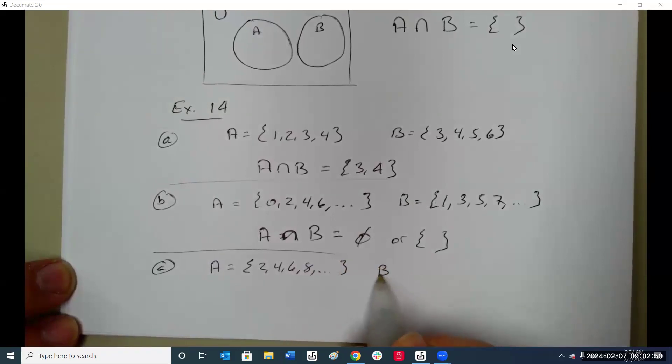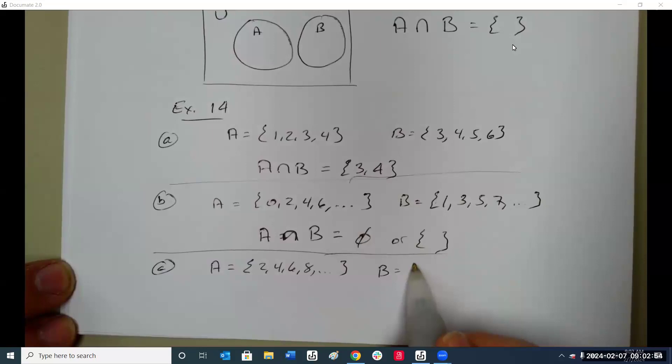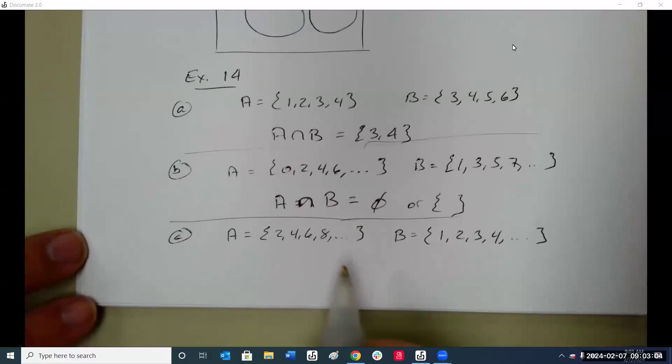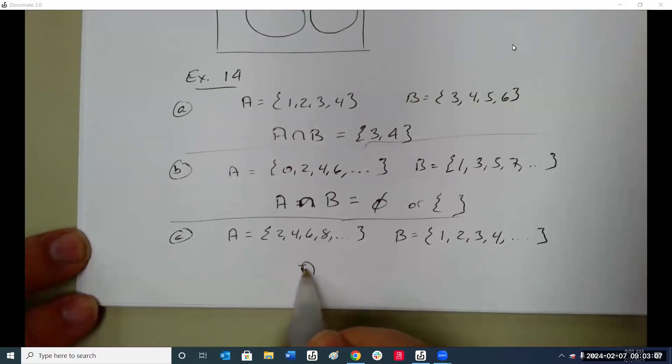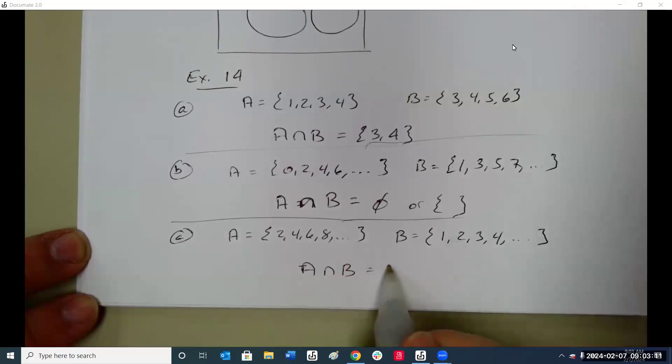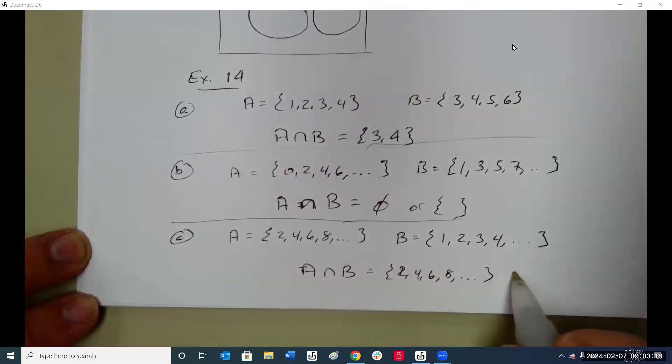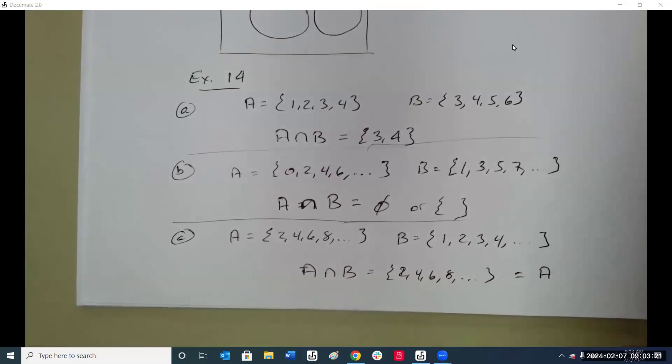Set A, the set of all even natural numbers. Set B are the natural numbers. Where do they overlap? They intersect at 2, 4, 6, 8, so they overlap on the evens.